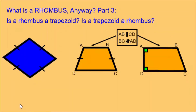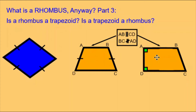Is a rhombus also a trapezoid, and is a trapezoid also a rhombus? Here we have a blue rhombus with little lines showing all four sides are congruent. We also have two different yellow trapezoids. The one on the left is an isosceles trapezoid — the little lines show that two opposite sides are equal in length, side AB is parallel to side CD, and side BC is not parallel to side AD.